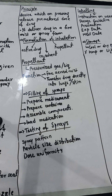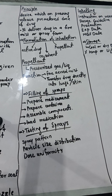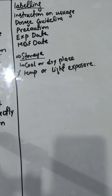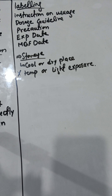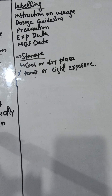Let's discuss what kind of labels should be used. Instructions on how to use it should be given on the label. Dosage guidelines should be given — what kind of dose is present and how much amount. Precautions should be given to the patient so that he can read them and prevent ineffectiveness or things which can cause the drug to deteriorate. The expiry date or manufacturing date should also be added on the label.